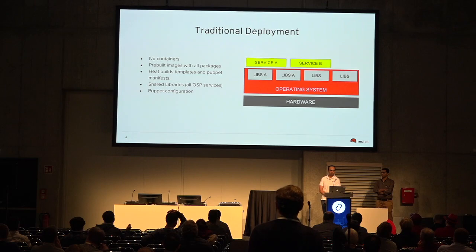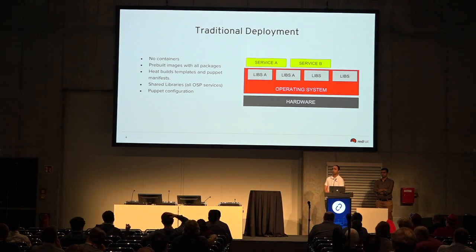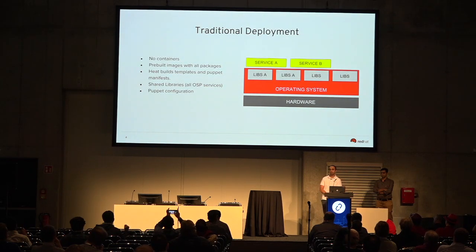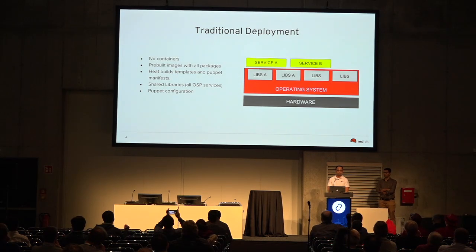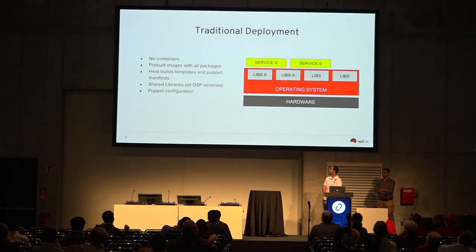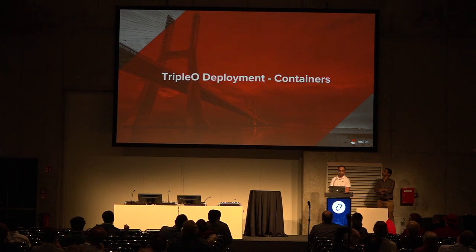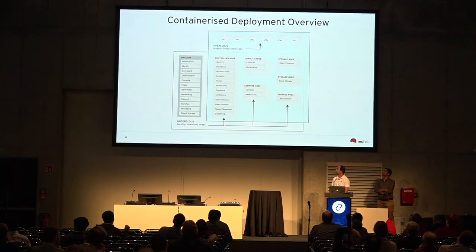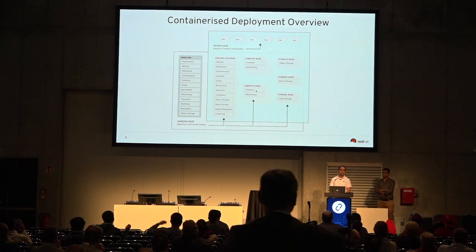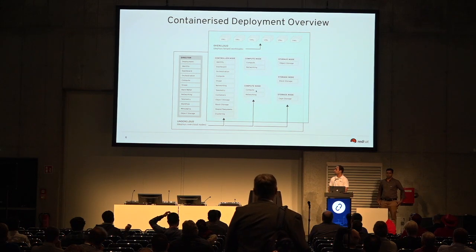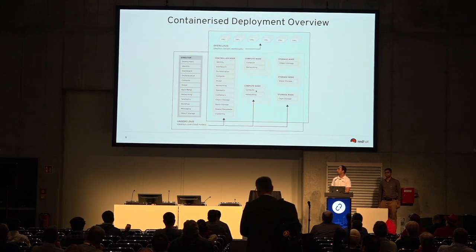In a traditional deployment, you have pre-built images with all packages installed and base configuration done. You have Heat, which builds the puppet configuration on the overcloud nodes and the OpenStack services, with all OpenStack services sharing the same underlying libraries. Now fast forward into TripleO containerized deployment — in a containerized deployment, we have all the SystemD managed services containerized. All the services still remain the same, but they're all in a container format.